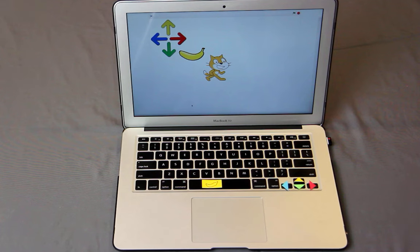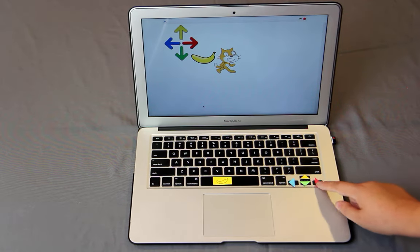Now let's get back to that program we wrote in Scratch that uses the space bar and the arrow keys. When the space bar is pressed, the program plays that sound meow, when the arrow keys are pressed, the cat moves in the corresponding direction.